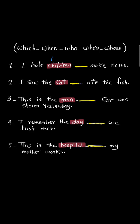If this word refers to people — like here, 'children,' which means kids, and kids are people — then you need to use 'who.' For example: I hate children who make noise.